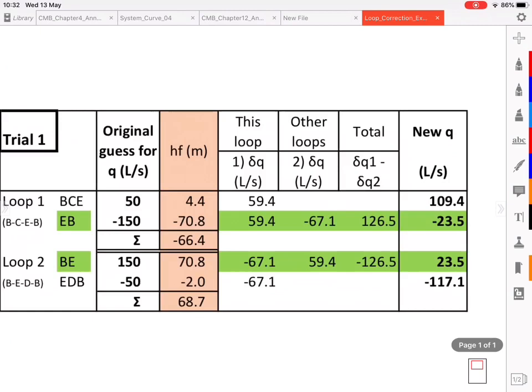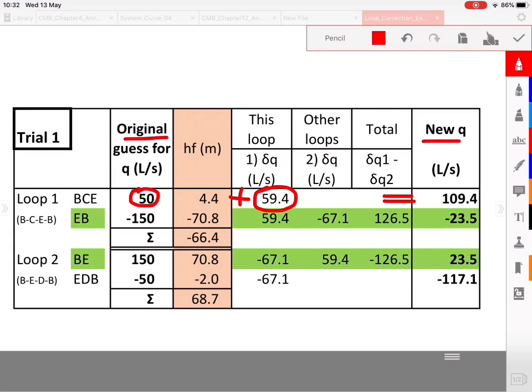Finally, we need a new Q for every pipe. It'll be the original Q for that pipe plus the correction factor. For shared pipes, we would have, in this example, minus 150 plus 126.5, which equals minus 23.5.